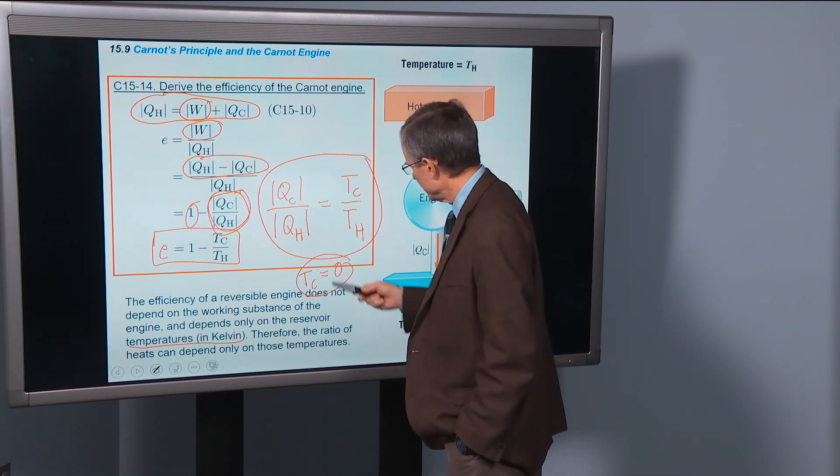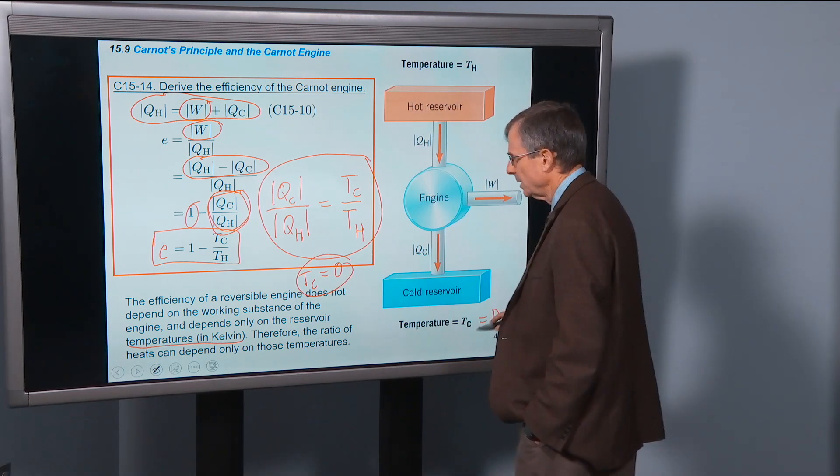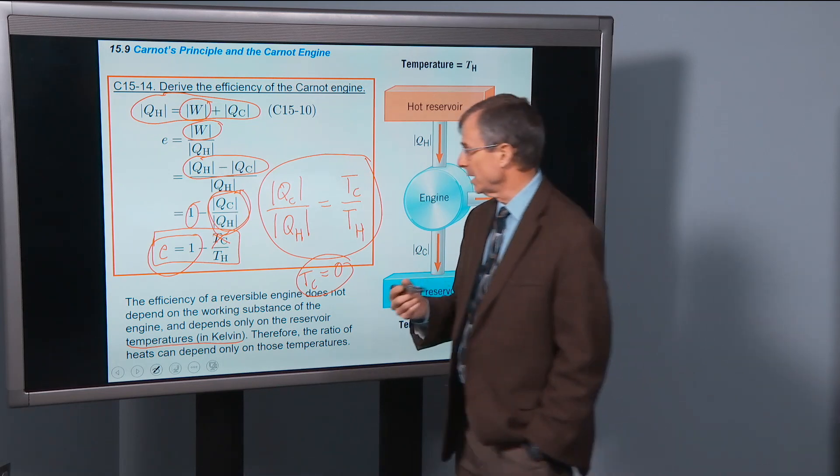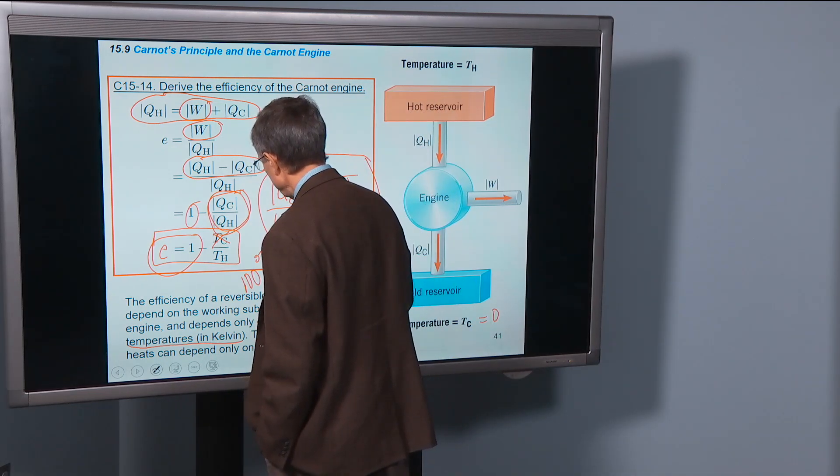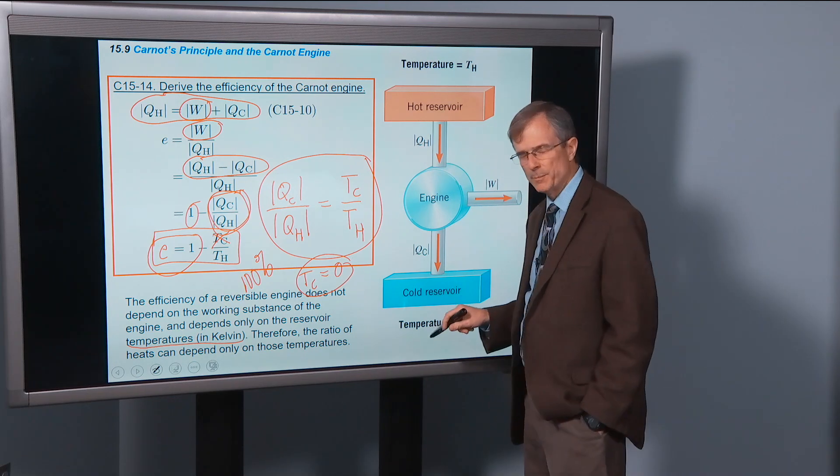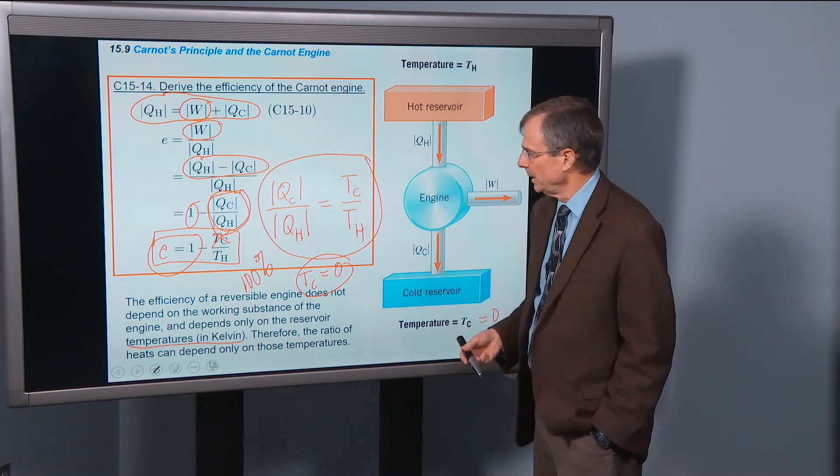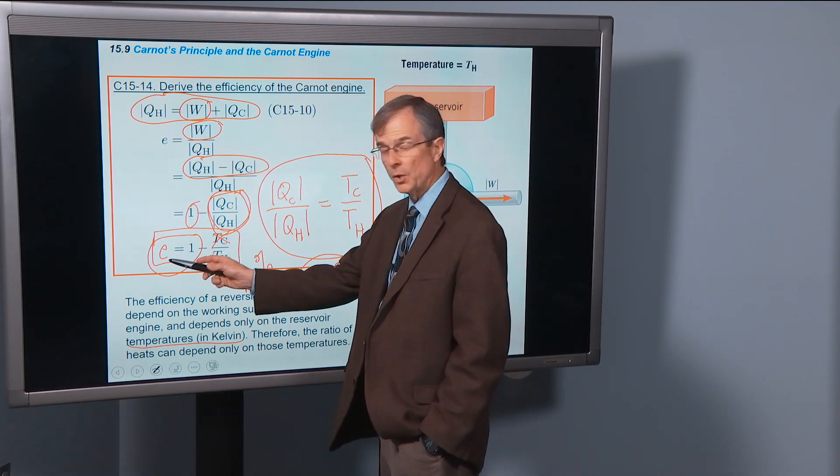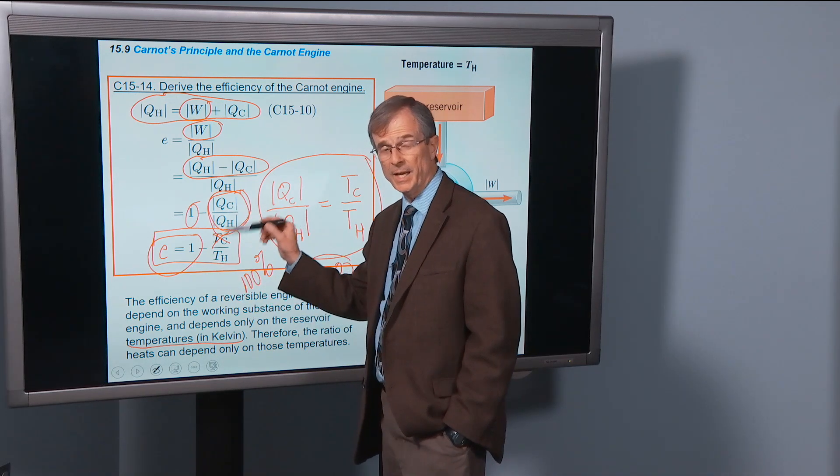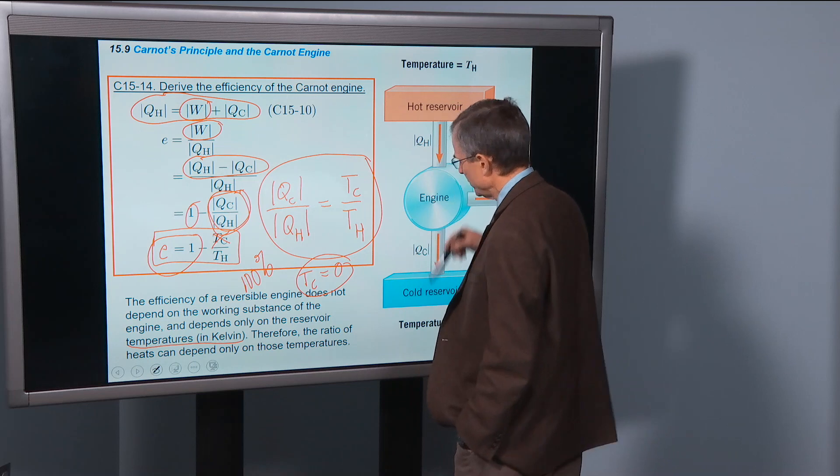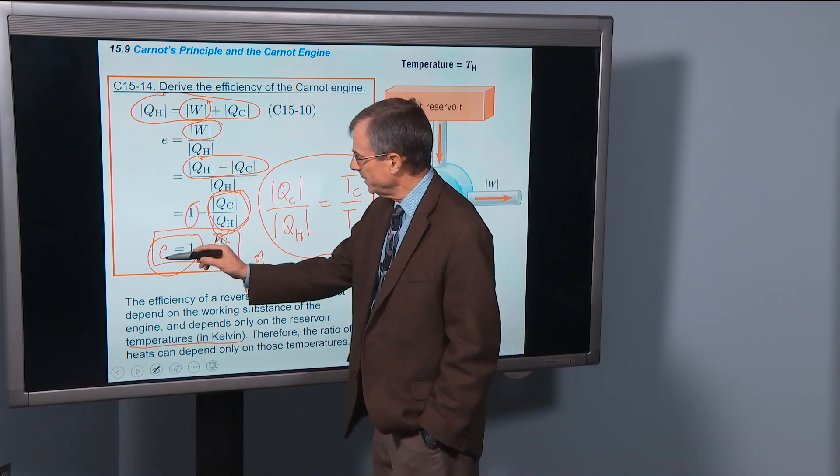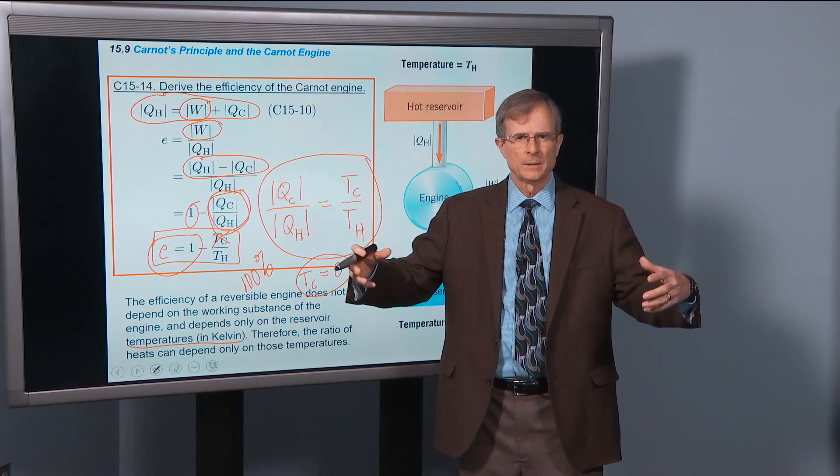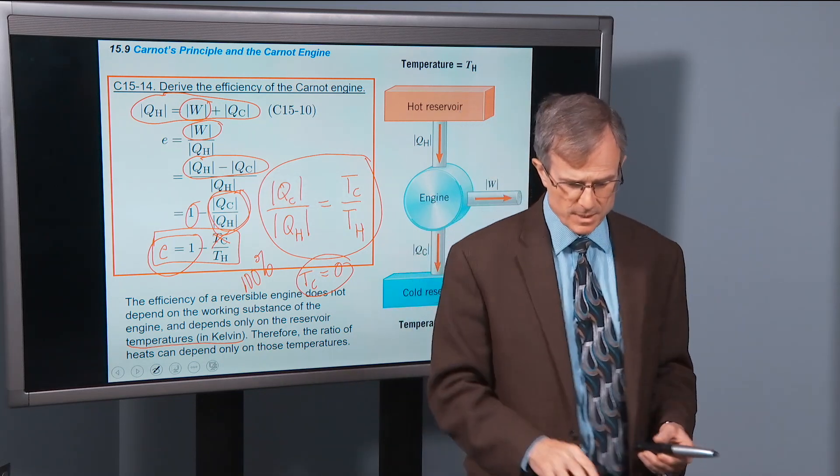If that temperature of the cold reservoir is zero, then this guy is going to be zero, and we get an efficiency of one. An efficiency of one means it's a hundred percent efficient. Well, you can never get a temperature of the cold reservoir to be zero, and so the more you raise that, and the closer the TC is to TH, the lower the efficiency is. Because if TC equals TH, if there's no difference between the temperatures of the cold and hot reservoirs, then the efficiency is going to be zero. So you need a temperature difference, the bigger the better, to create an efficient heat engine.